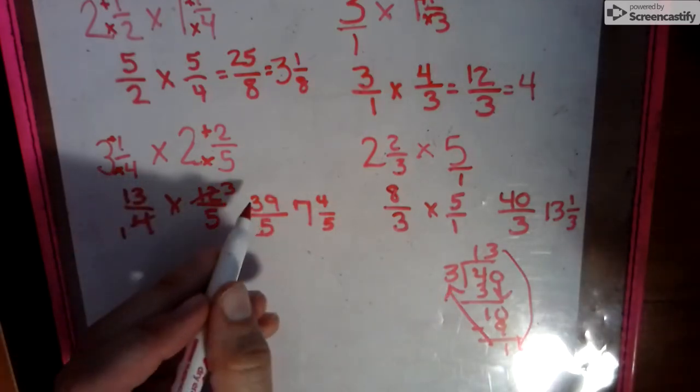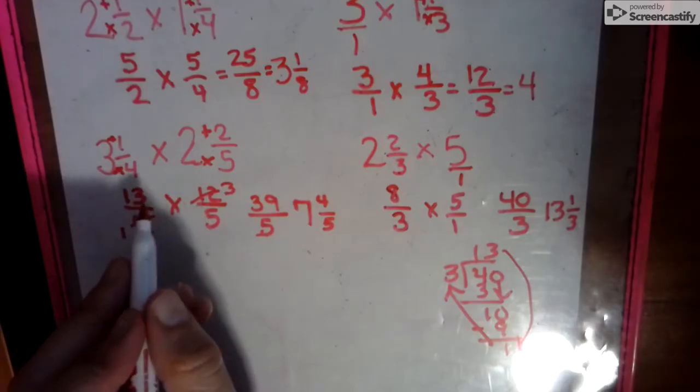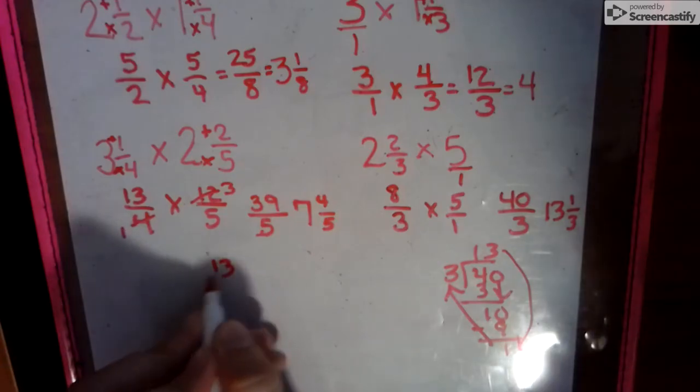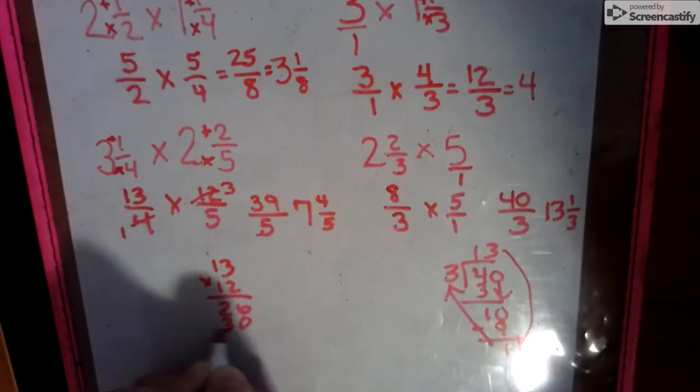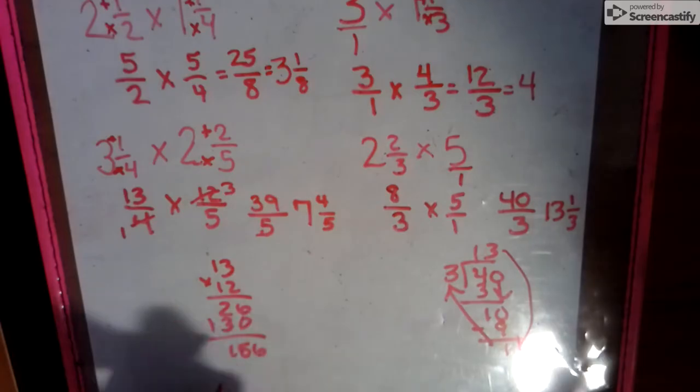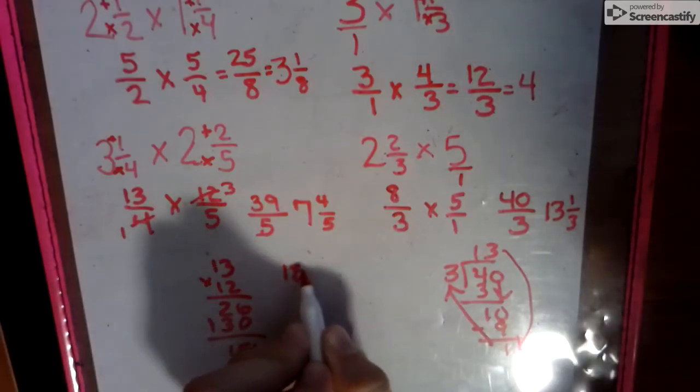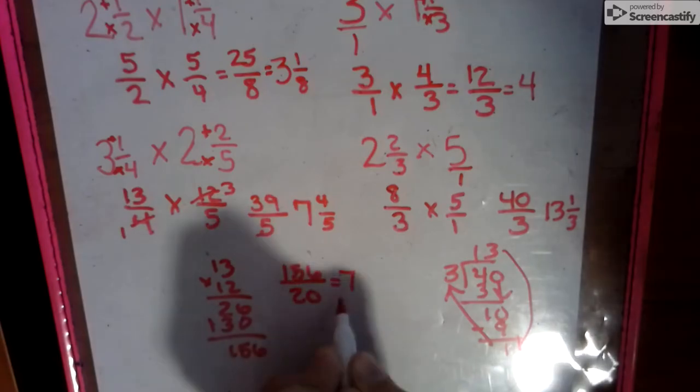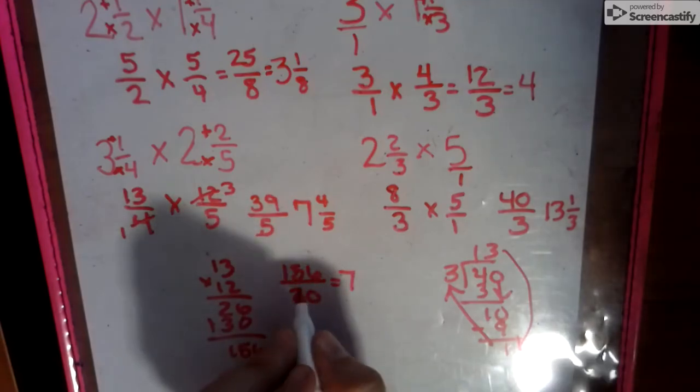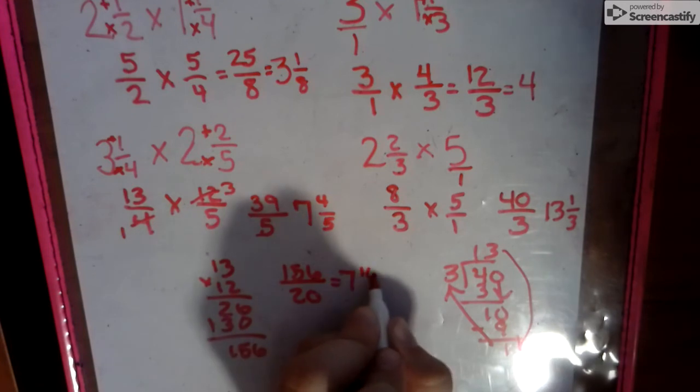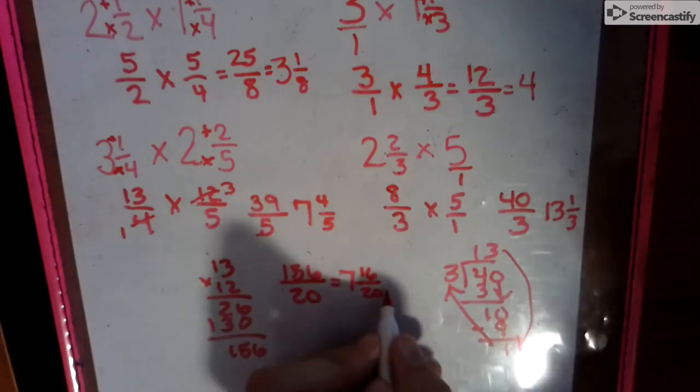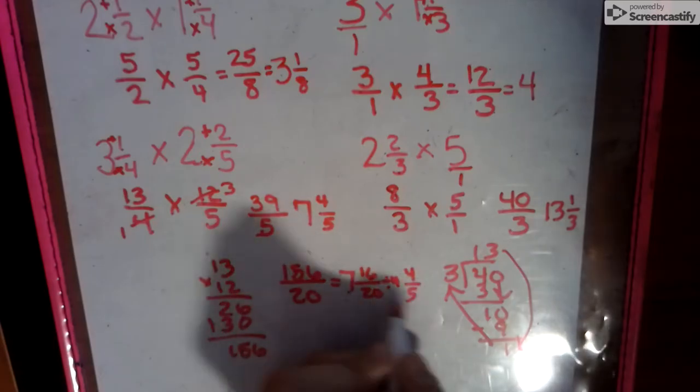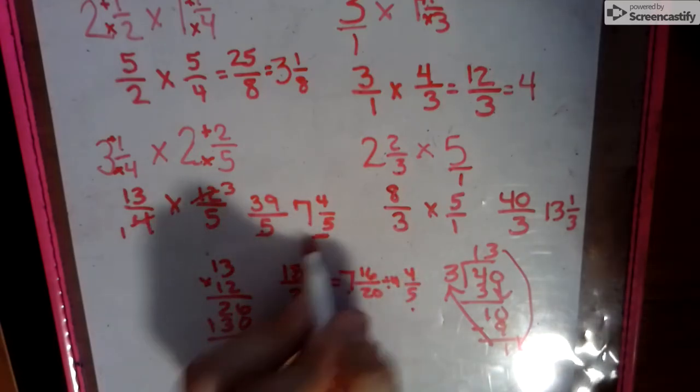if you didn't like the diagonal cross-outs, you can still do 13 times 12 and 4 times 5 because 13 times 12 is 156. You would just have 156 over 20, and that would go in 7 times to make 140, and then 16 20ths left over, which we then can divide by 4, and that's where the 4 fifths. 7 and 4 fifths, same answer is right there.